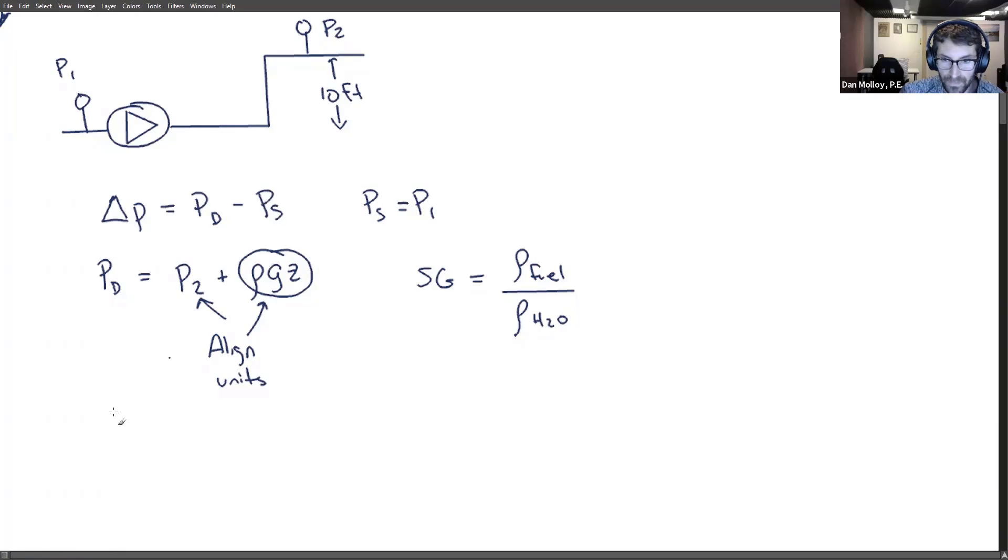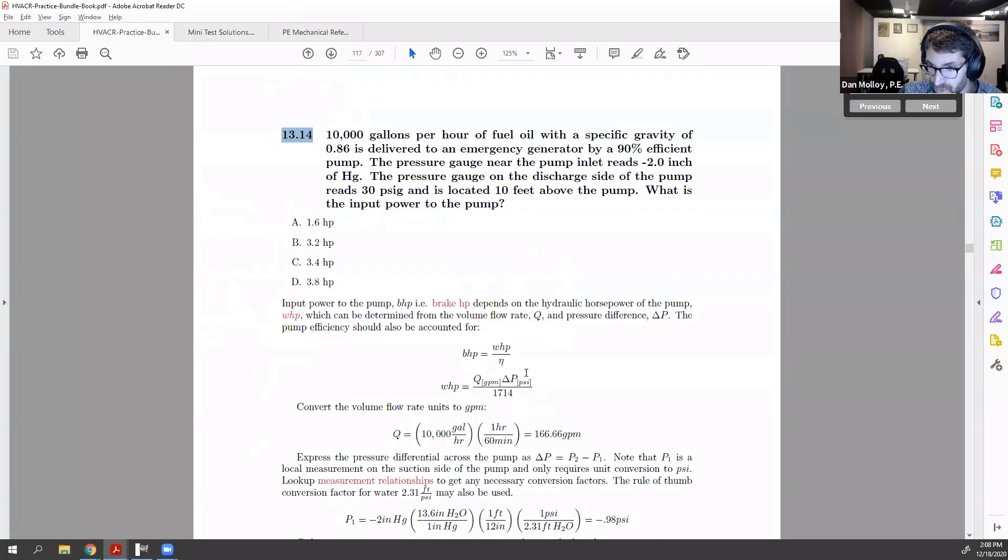Then and only then can I add to P2, I can get the discharge pressure, and ultimately you'll get the delta P in psi. When you do that, you're allowed to use the formula WHP equals Q in GPM times delta P in psi over 1714. That formula, and that's the formula that I used in my solution here.